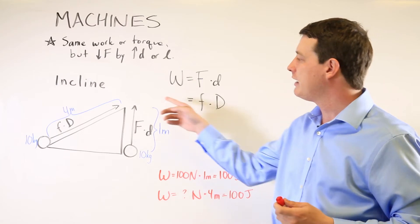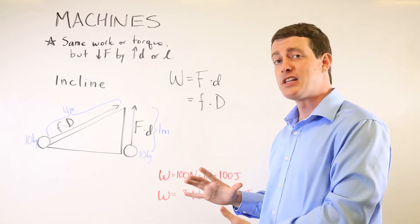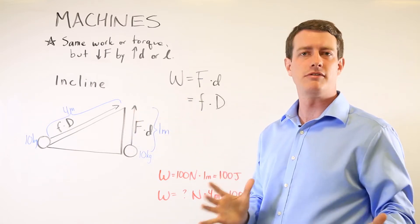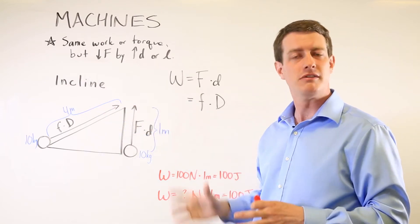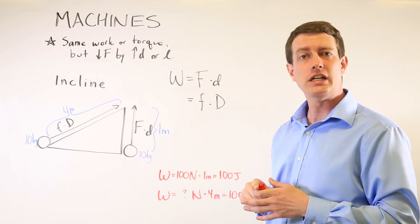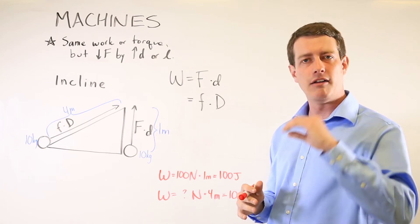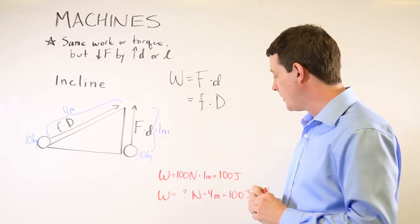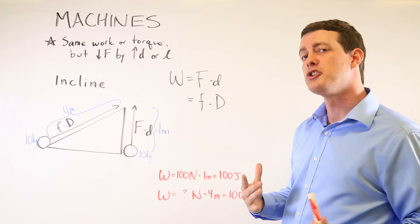However, by using a ramp that has a distance of four meters, you can reduce the amount of force necessary but still accomplish the exact same work. The object reaches the same final position, and that's the whole point of a machine like an incline. Because there's a one-to-four ratio of distances, moving the object along this path versus using the machine gives you a four-to-one mechanical advantage, reducing the force necessary by a four-to-one ratio. So rather than a 100 newton force lifting it one meter, you're using some unknown force lifting it four meters and still accomplishing the same 100 joules of work.